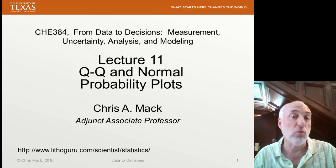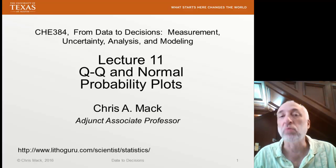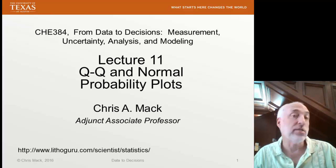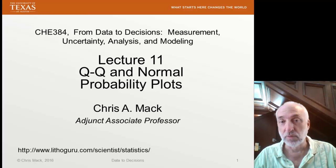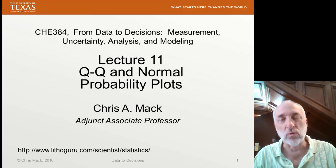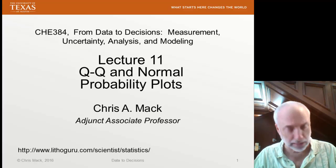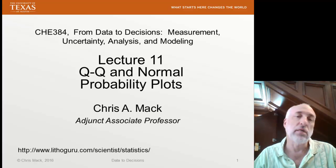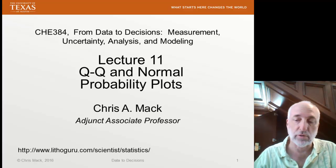Normal probability plots will be for the assumption of a normal distribution, and more general QQ plots will be for any distribution you may want to assume. As we talked about in the last lecture, we sometimes have to evaluate whether a set of residuals follows something like a normal distribution or not. We need to make this evaluation to check the assumptions of an ordinary least squares regression.